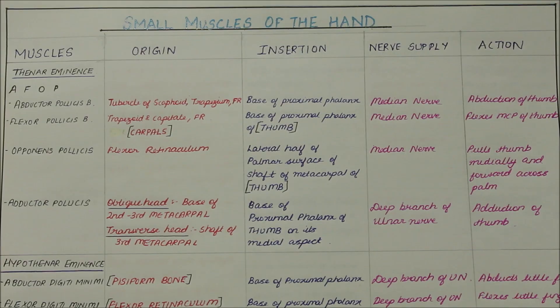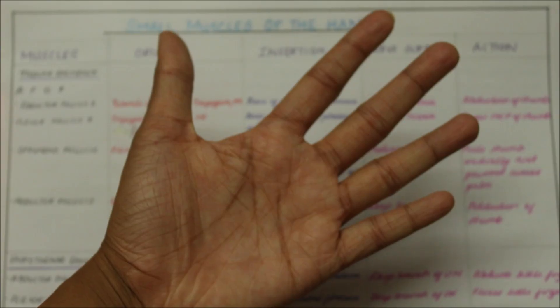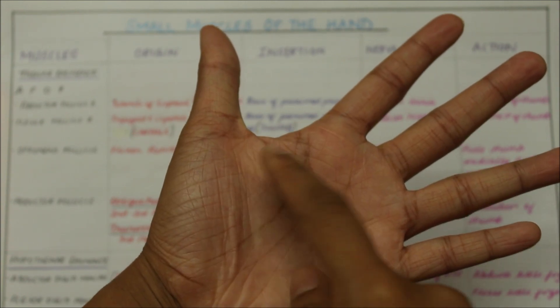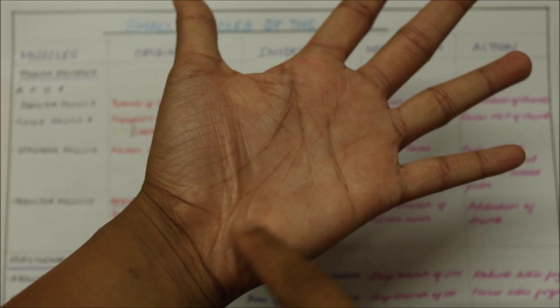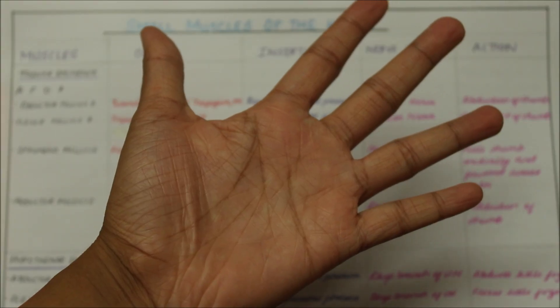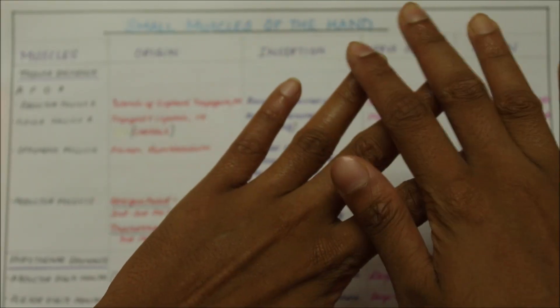Hello friends and welcome to my channel. Today we will be learning about the origin, insertion, nerve supply and action of the muscles of the body. In this video we will be learning about the small muscles of the hand. There are mainly five groups of muscles in the hand: the thenar eminence, the hypothenar eminence, the four lumbricals, the palmar interossei on the palmar side, and the dorsal interossei for the dorsal side.